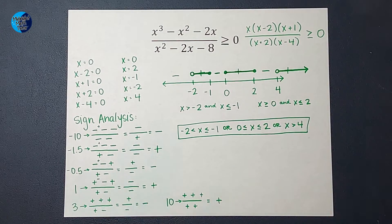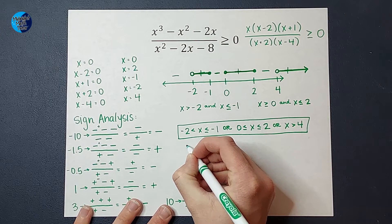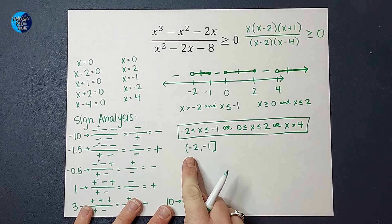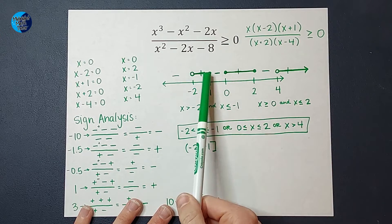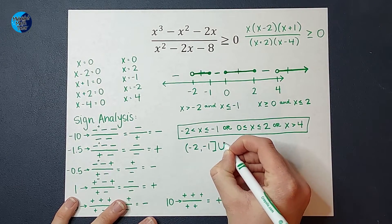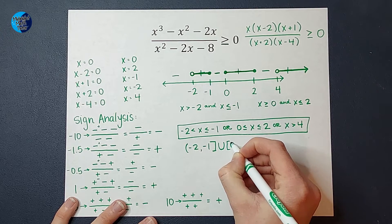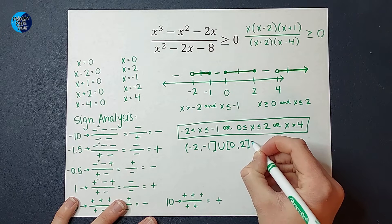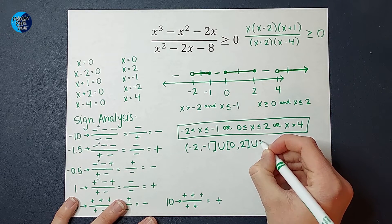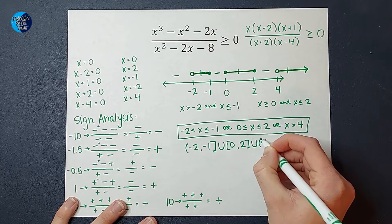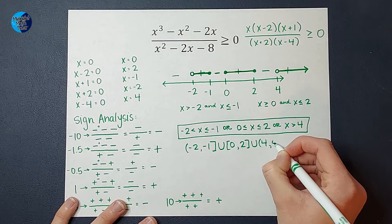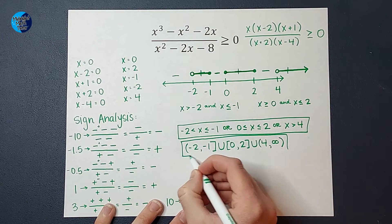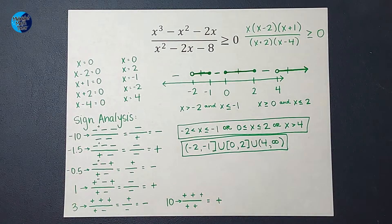If your teacher wants it in interval notation: you can pick a number from negative 2 to negative 1 — negative 2 gets a parenthesis because it's not included, negative 1 gets a bracket because it is included. Then union with 0 to 2, where 0 and 2 are included so they get brackets. Another union with 4, not including 4 so it gets a parenthesis, all the way to infinity — and infinity always gets a parenthesis. Both of those are the same answer, just written in different formats.